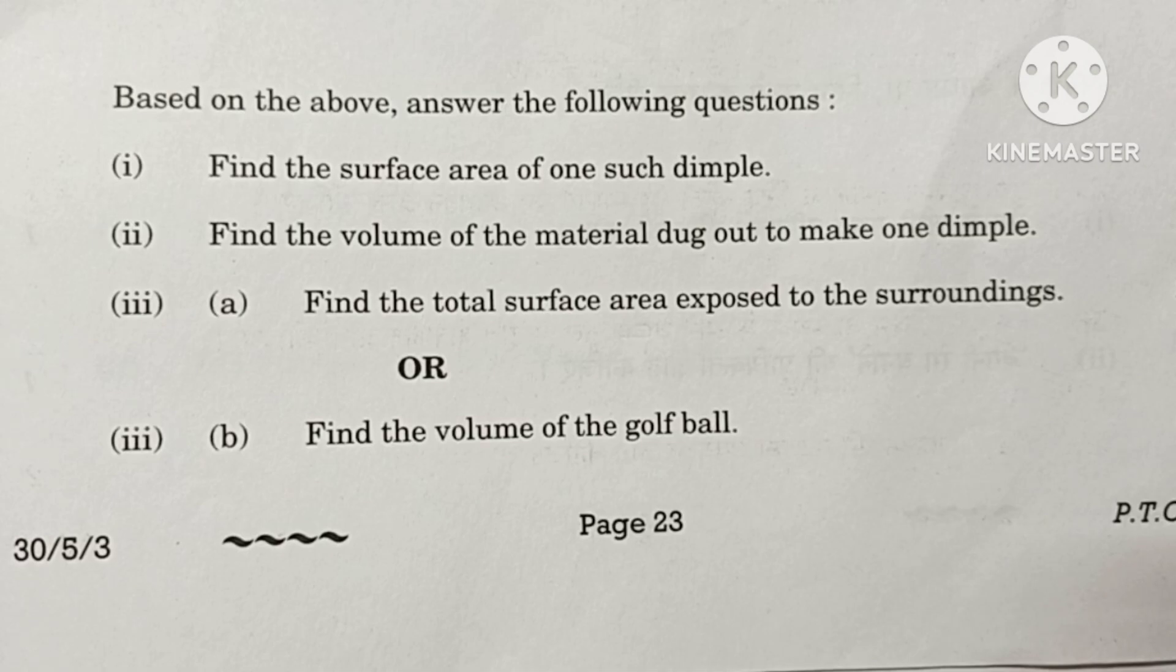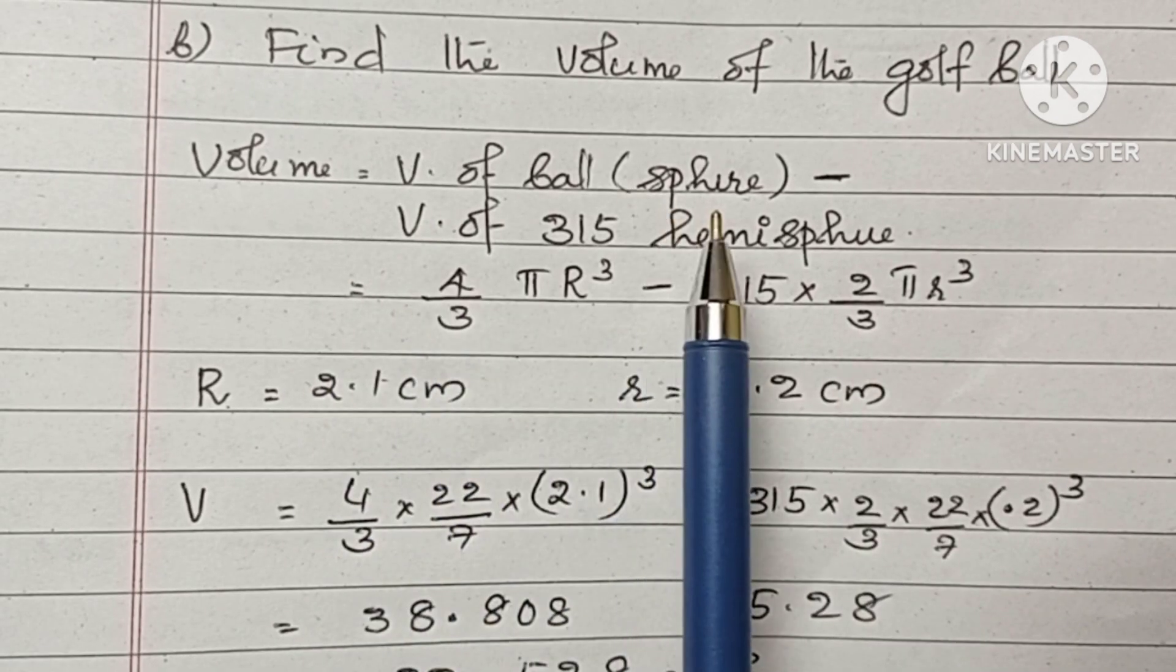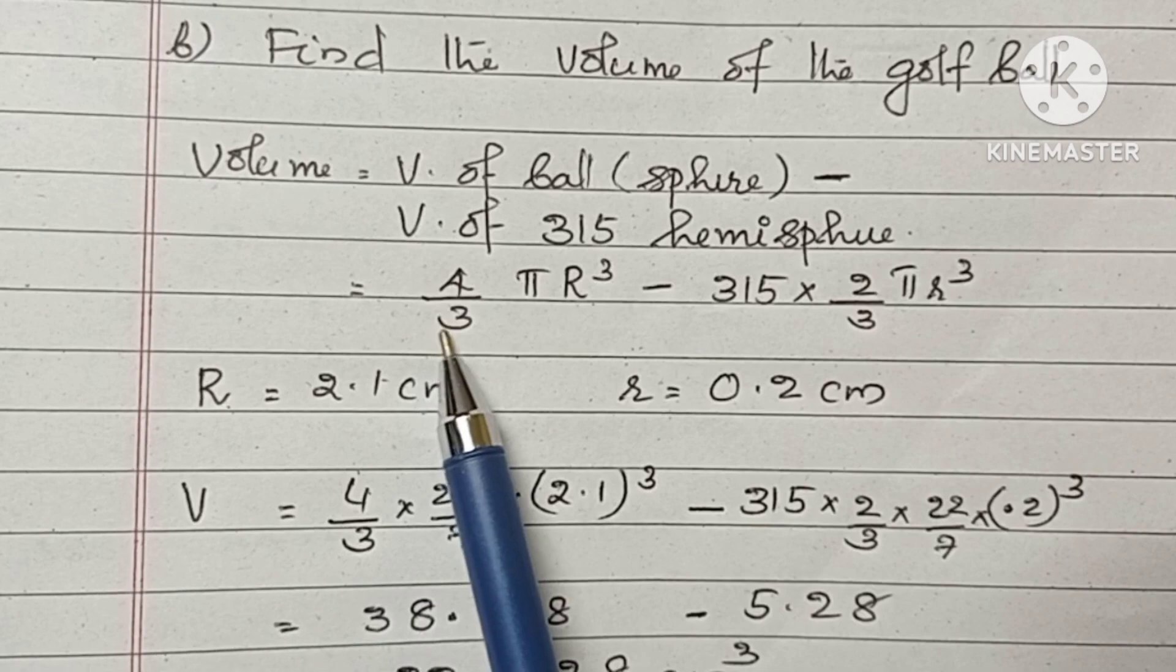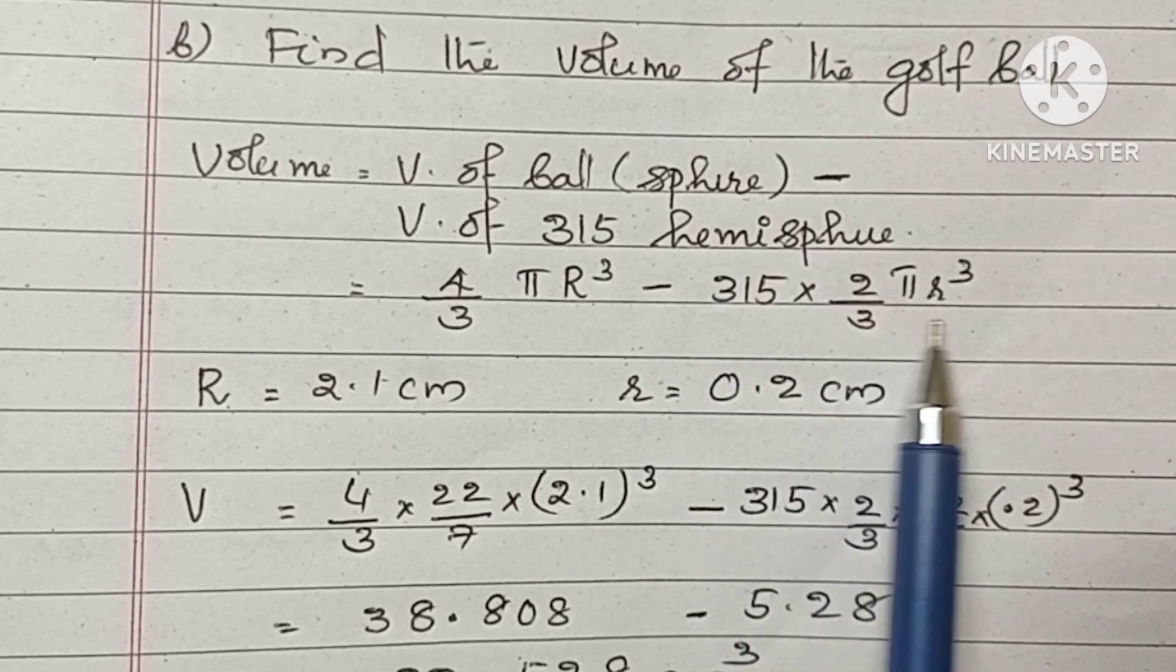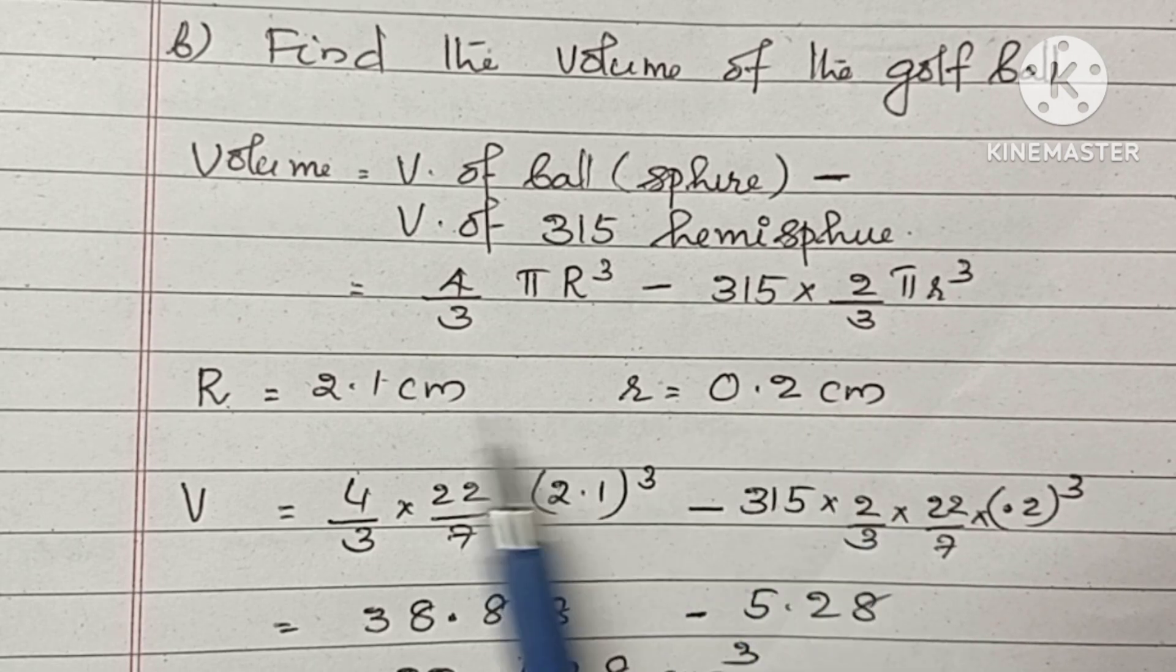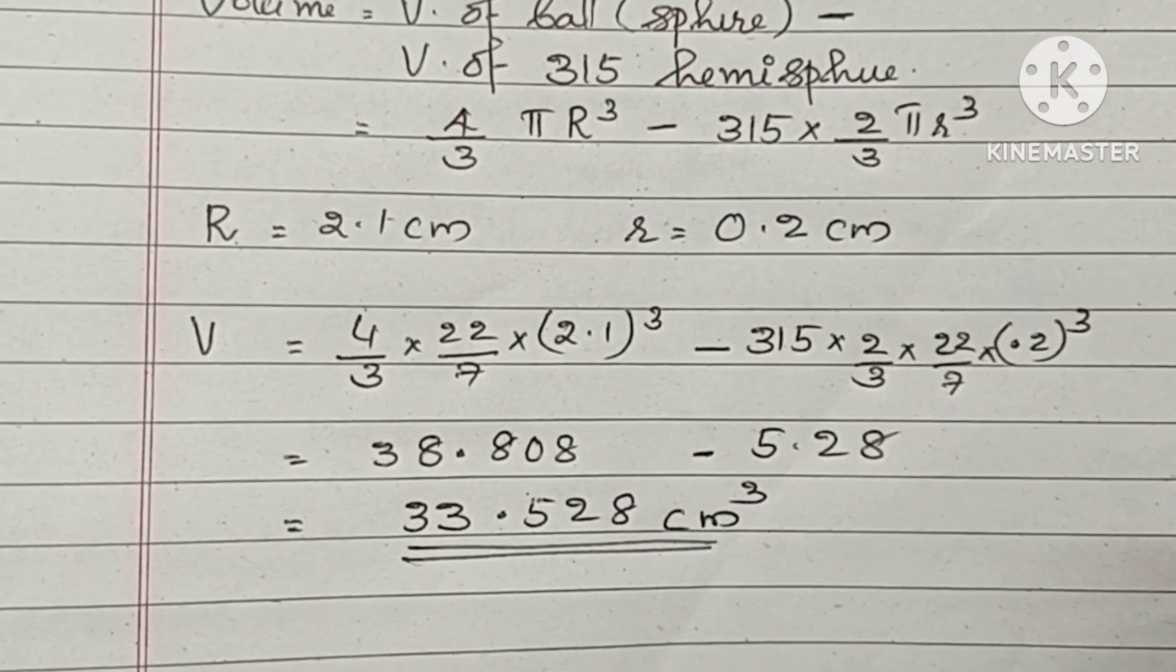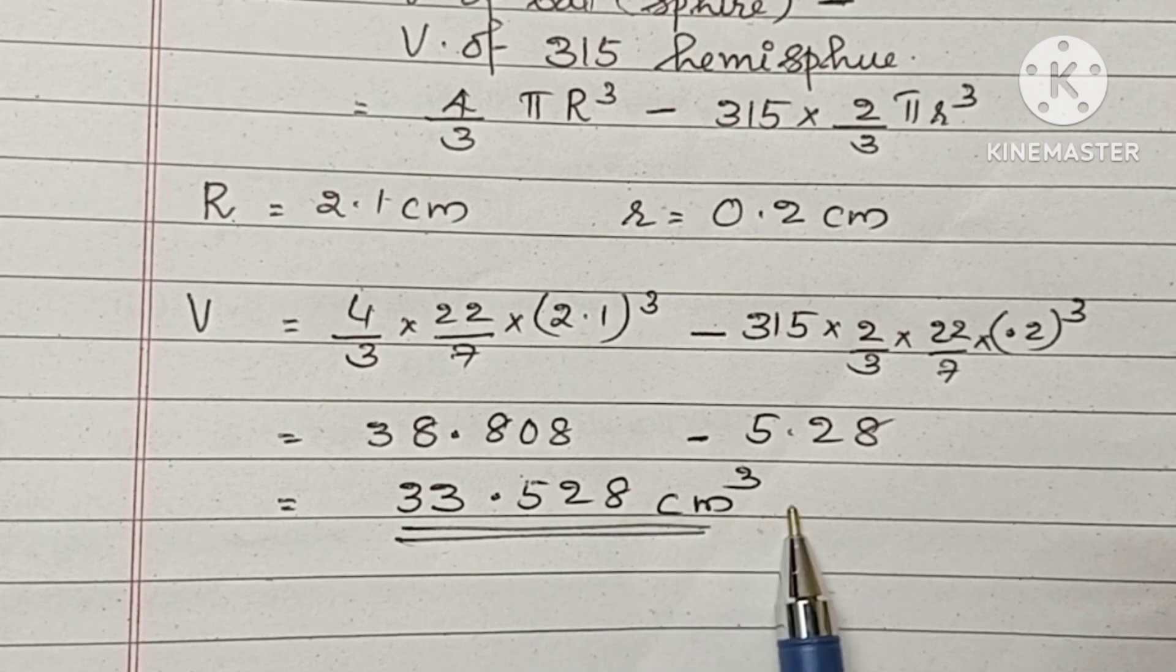And the last part of the question is, find the volume of the golf ball. Volume of the golf ball is equal to volume of the golf ball, that is, total volume, minus volume of 315 hemisphere. 4/3 πR³ minus 315 into hemisphere volume is 2/3 πr³. Volume of, radius of the golf ball is 2.1 cm. And radius of the small dimples are 0.2 cm. We are converting both units into cm. Substituting each value and solving, we will get the final answer as 33.528 cm³.